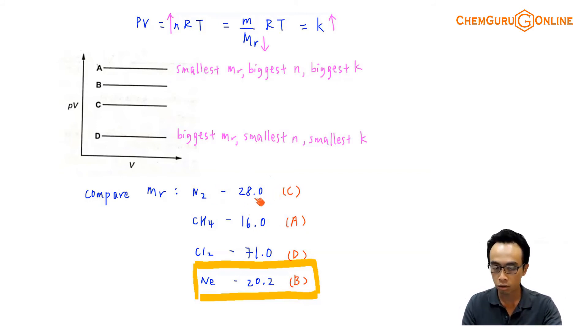So N2 molar mass is 28.0, CH4 molar mass is 16.0, chlorine Cl2 molar mass is 71.0, neon gas the molar mass is 20.2. So based on this, I can rank them accordingly.